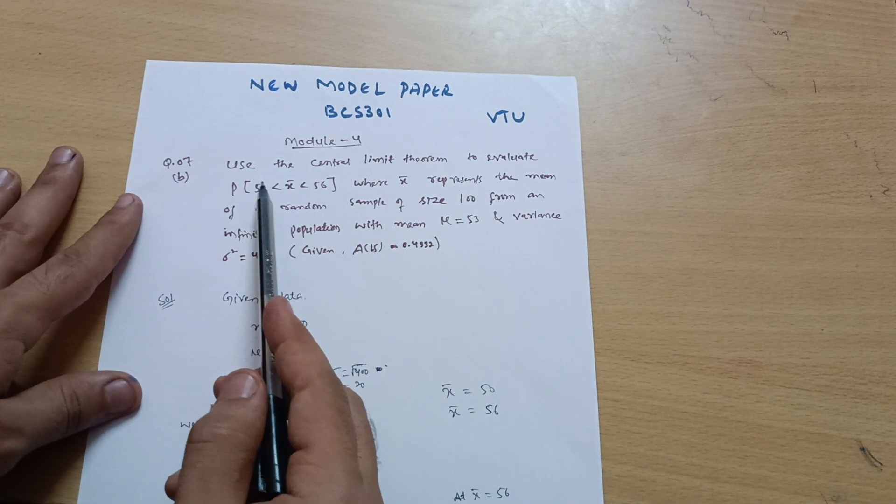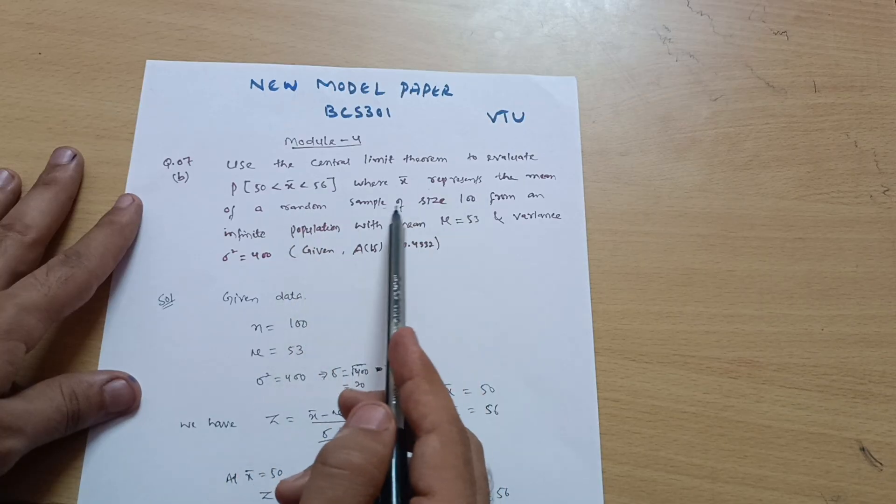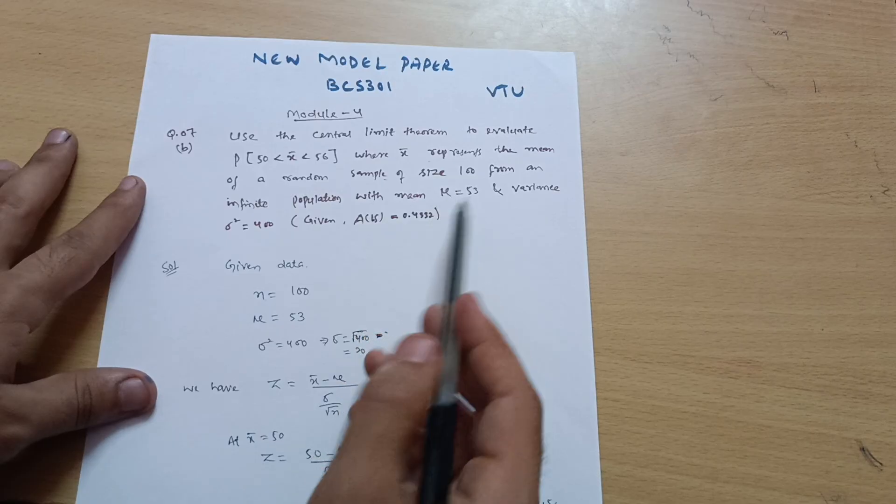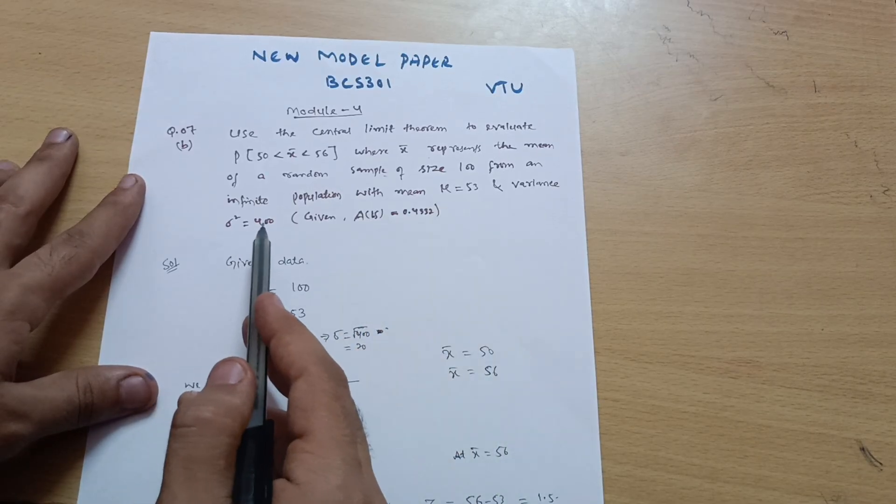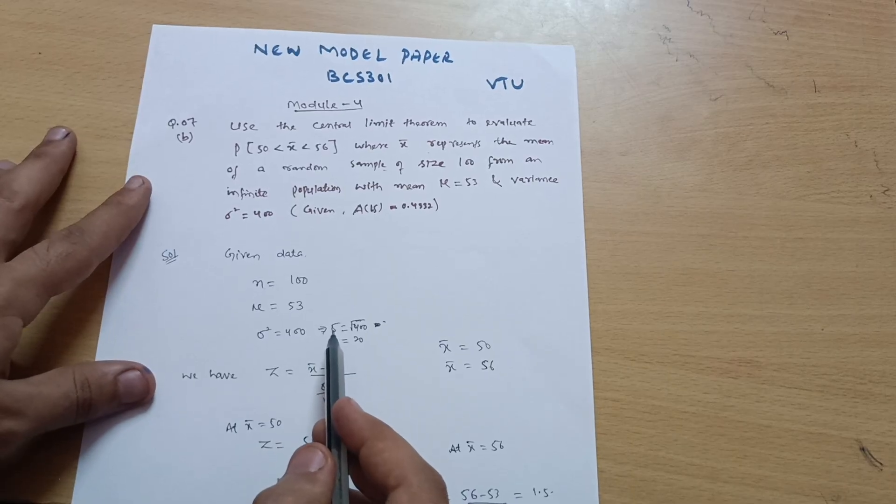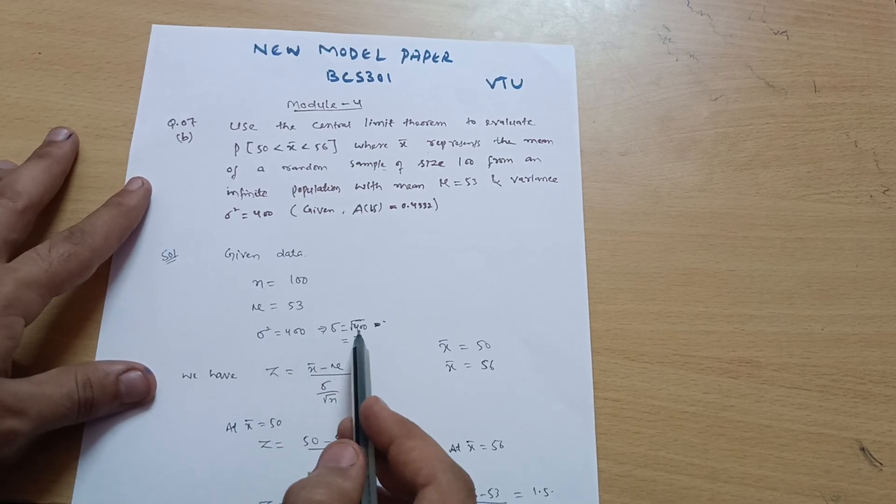What all is the data given? First, the mean of a random sample is given, so n = 100. Next, μ = 53, and variance σ² = 400, by which we can calculate the standard deviation: σ = √400 = 20.